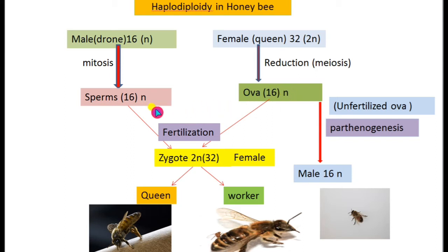If the sperm and ova fuse — a process known as fertilization — they form a zygote. The chromosomal number of the zygote is 32, the diploid condition, so it develops into a female insect.